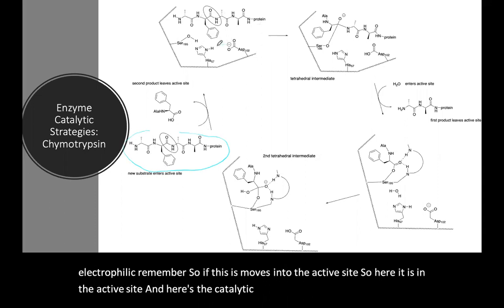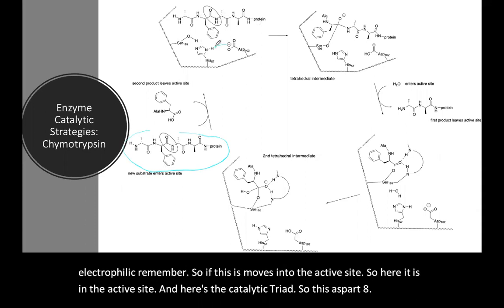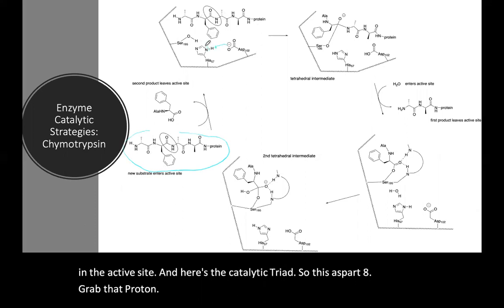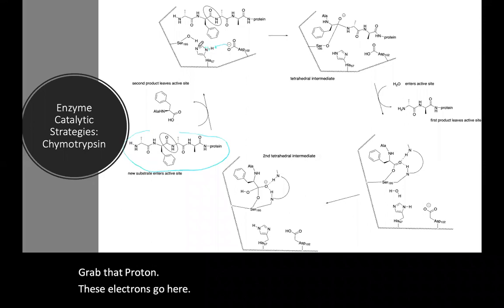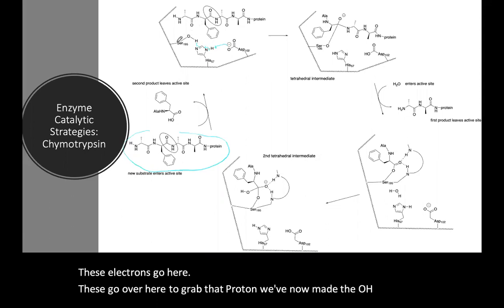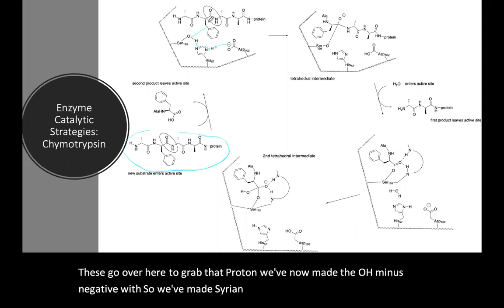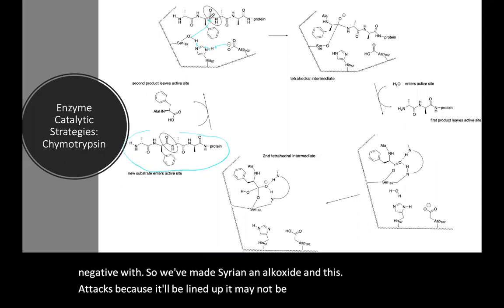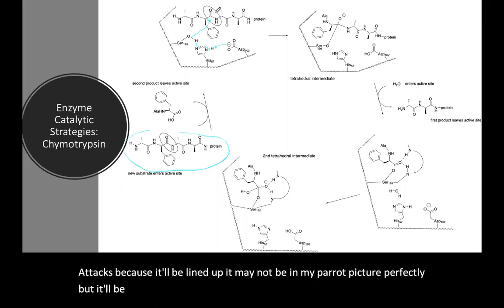So this aspartate grabs that proton, these electrons go here, these go over here to grab that proton. We've now made the OH minus negative which we've made serine an alkoxide and this attacks because it'll be lined up and we'll break the pi bond.